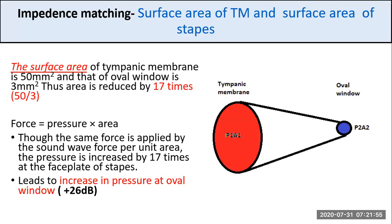The first mechanism is the change in surface area of the tympanic membrane and the stapes. The surface area of the tympanic membrane is 50 square millimeters and that of the oval window is 3 square millimeters. So the area is reduced by 17 times. There exists a size difference, and this means the force produced by the sound is concentrated at a smaller area. This will amplify the pressure exerted at the smaller area, and in this case, it is the oval window.